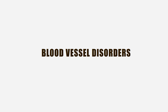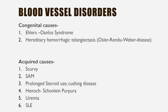Briefly on blood vessel disorders — these can be congenital or acquired. Congenital causes include Alagille syndrome and hereditary hemorrhagic telangiectasia, also known as Osler-Rendu-Weber disease. Acquired causes include scurvy (gum bleeding and mucosal bleeding), severe acute malaria, prolonged steroid use, and Cushing's disease.